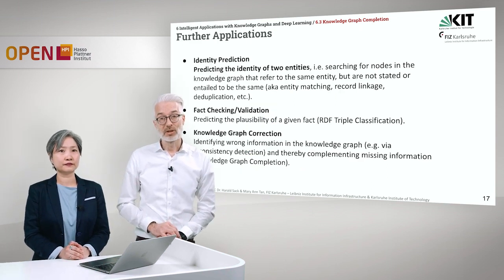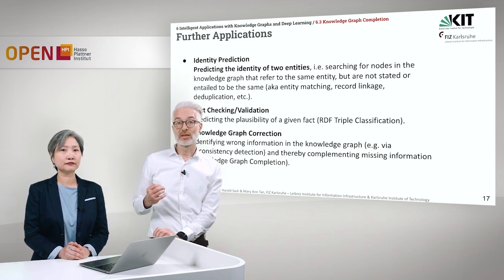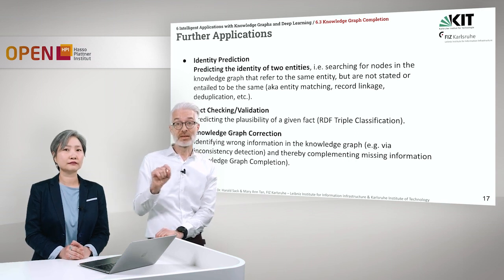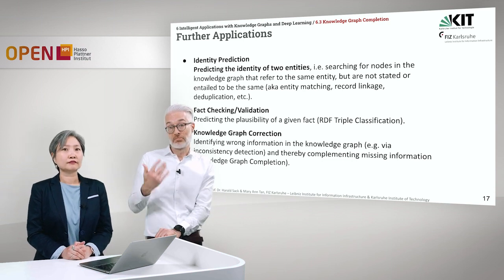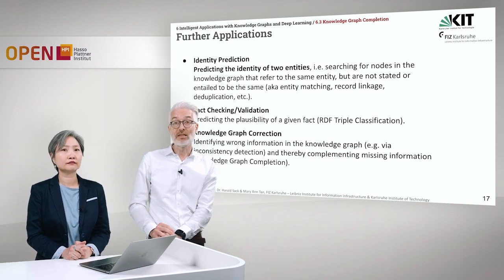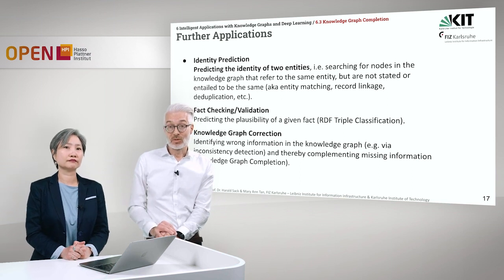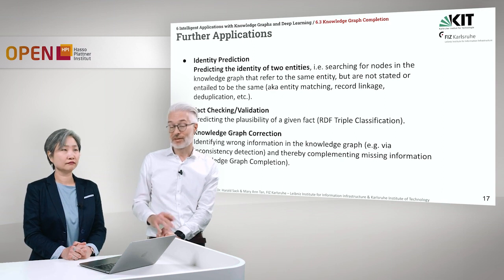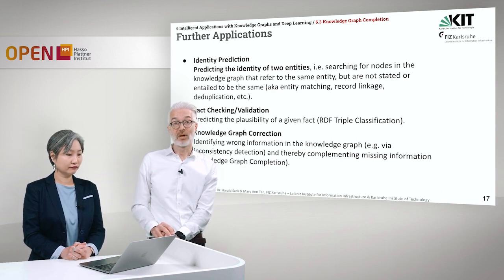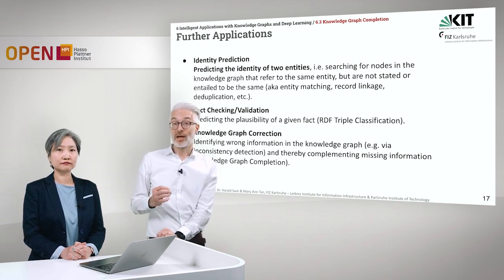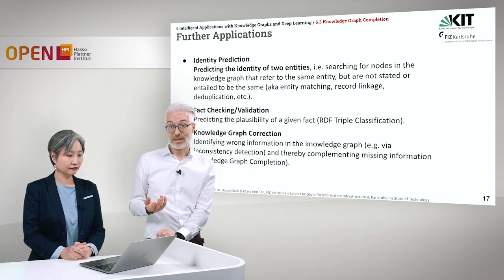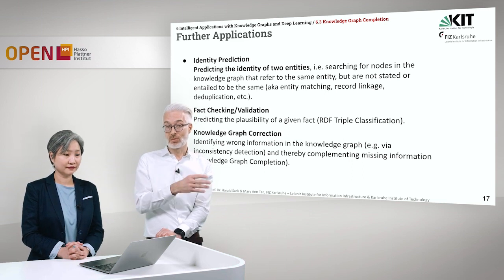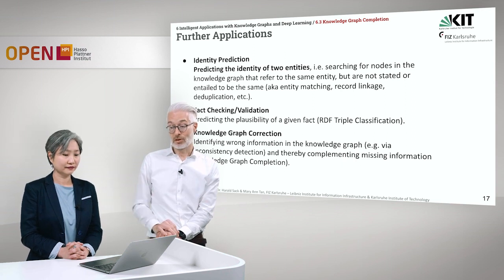Further applications of link prediction and knowledge graph completion include identity prediction — predicting the identity of two entities, searching for nodes that refer to the same entity but are not explicitly stated to be the same, similar to entity matching, record linkage, or deduplication. Another important problem is fact checking and validation, where we try to predict the plausibility of a given fact — a triple classification problem. And when fact checking identifies something as wrong, knowledge graph correction follows: first identifying wrong information, then complementing missing information to correct the knowledge graph.